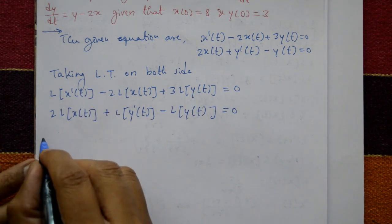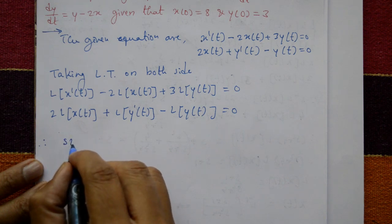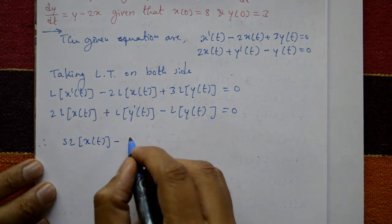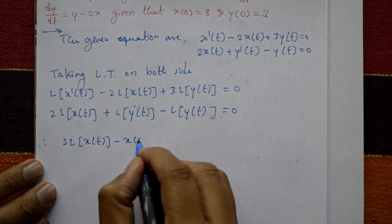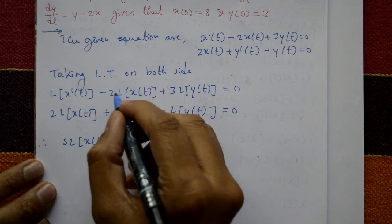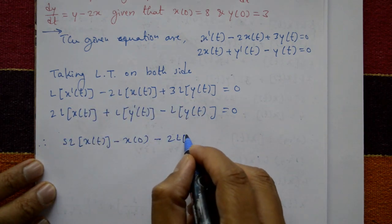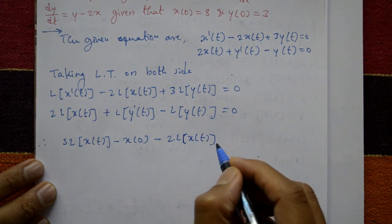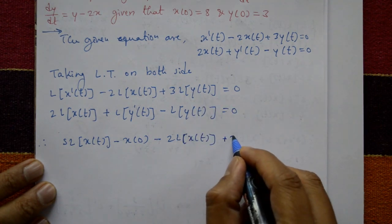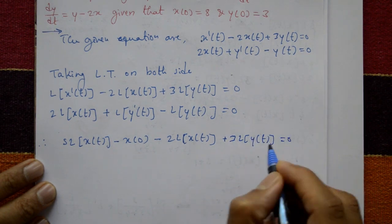Applying the derivative formula to the first equation: s·Laplace[x(t)] − x(0) − 2·Laplace[x(t)] + 3·Laplace[y(t)] = 0.